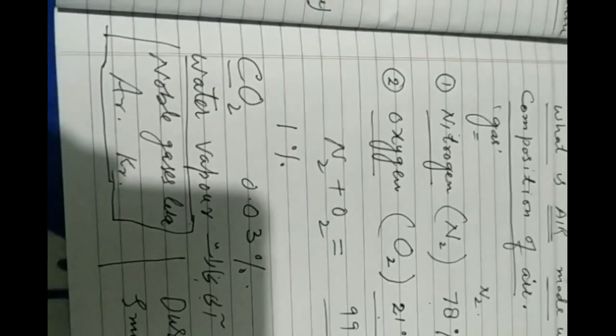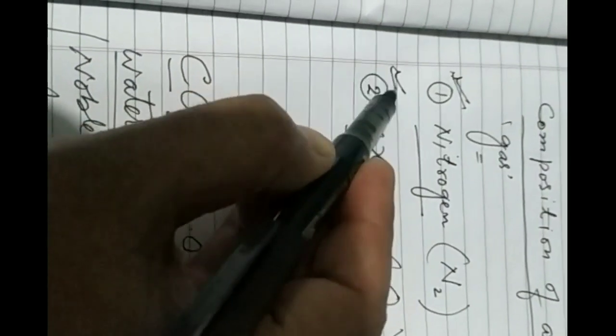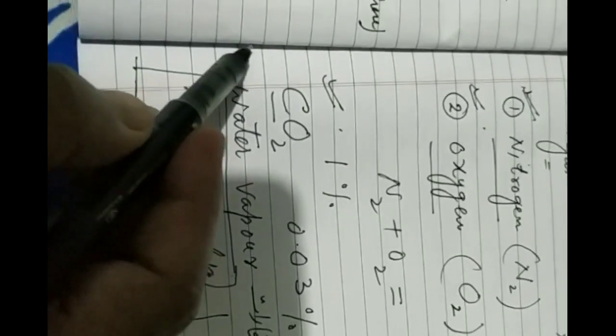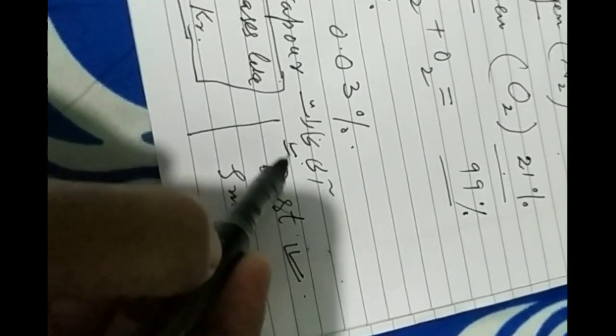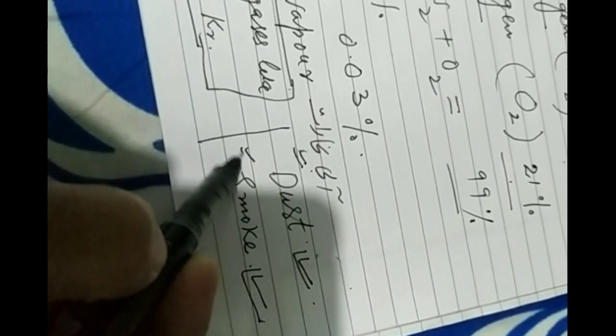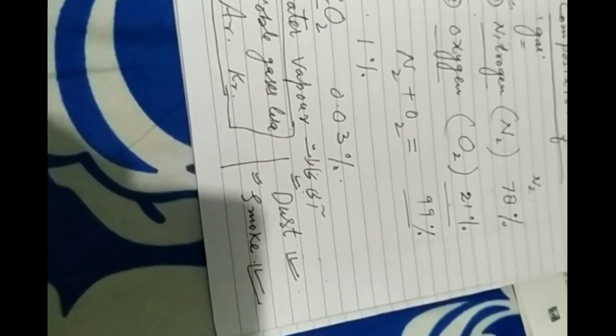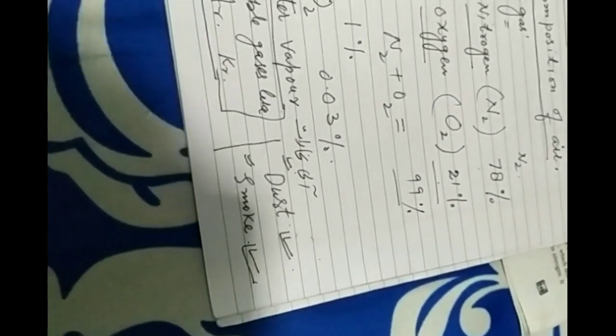Let us see all this: nitrogen, oxygen, carbon dioxide, water vapour, noble gases like argon and krypton, dust particles, and smoke.